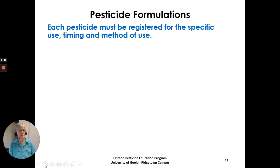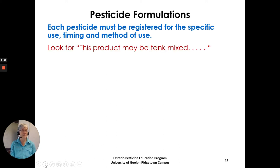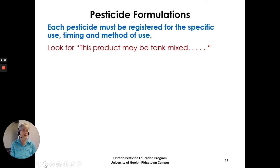Each pesticide must be registered for a specific use, timing, and method of use — the crop, the pest, the timing, and whether it's an aerial application or a soil drench. The method of use must match. Look for a 'tank mix' indication on the product label; that's a clear indication that you're approved to tank mix those two products together, as it's actually stated on the label.